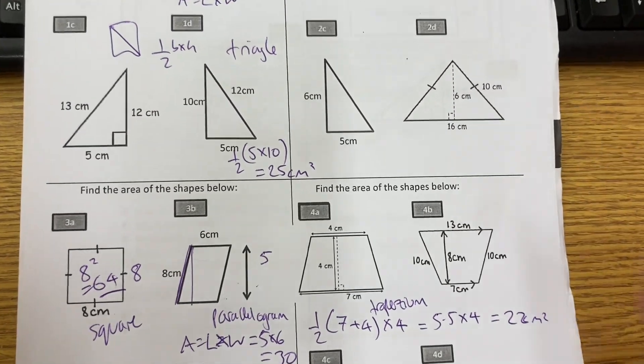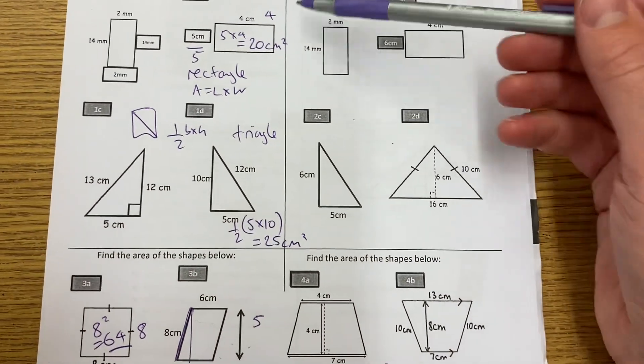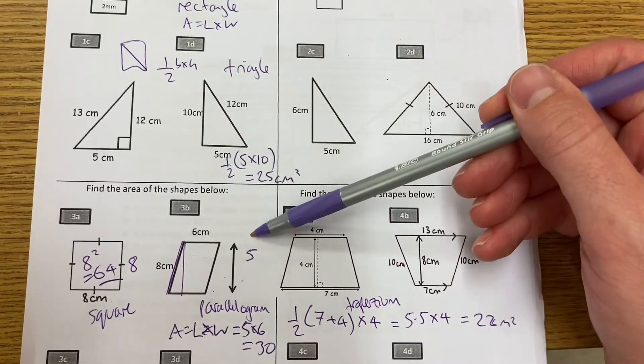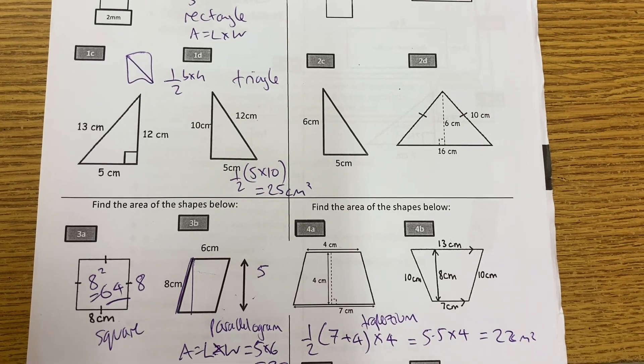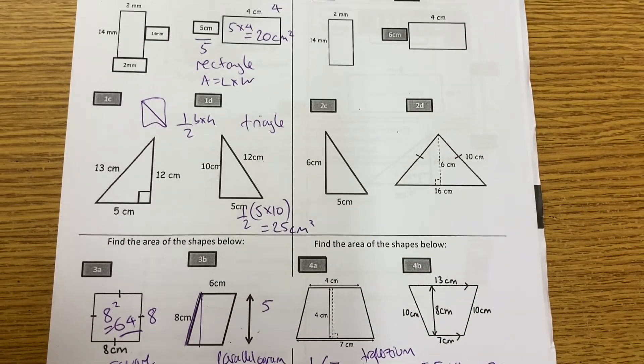There we go. That's area of some 2D shapes: rectangles, triangles, squares, parallelogram, trapezium. Please do have a look at the other video I have on my channel about deriving those formulae. Thanks for watching. Don't forget to like, subscribe, and share.